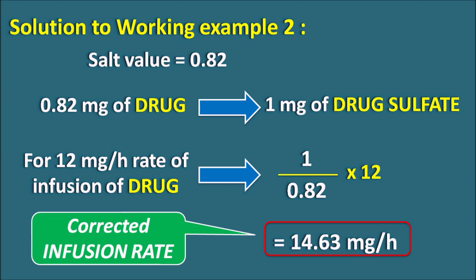The plain drug infusion rate is 12 mg/hr, but the sulfate salt must be given at 14.63 mg/hr because the salt cannot release 100% of the drug. By using the salt form correction factor, we can accurately calculate the loading dose and infusion rates for salt forms of drugs, since different salts are not equivalent to each other or the plain drug.